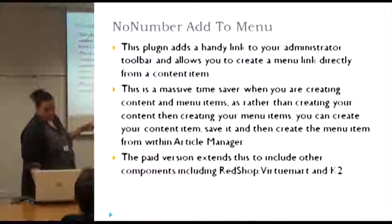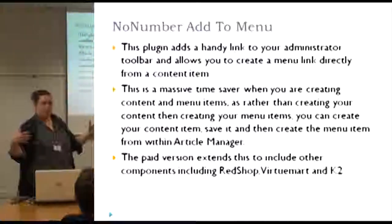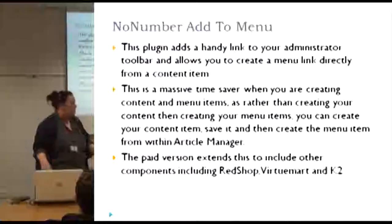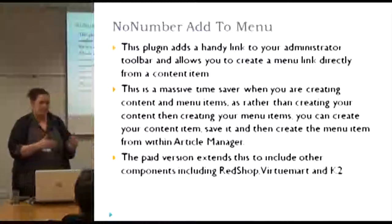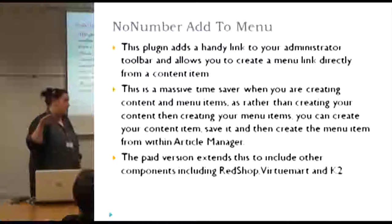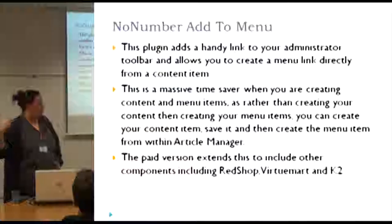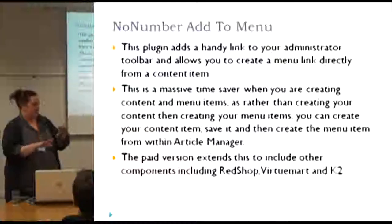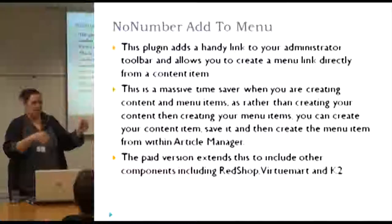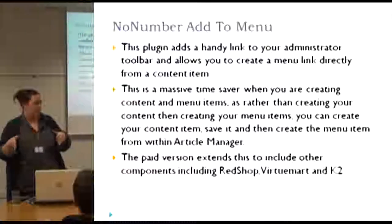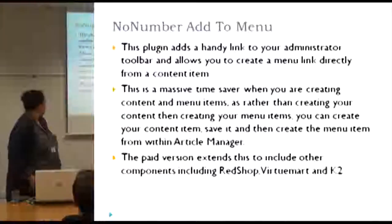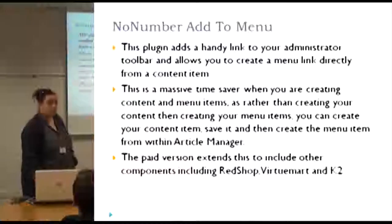The next one I use a lot, especially when I'm building a site, is No Number Add to Menu. Normally when you're building a site, you create the content, then you go back and create your menu items from the menu manager. With Add to Menu, once you've created a content item and saved it, you'll see a little button that says Add to Menu. You can then create menu items as you go, and with a big site that can save you hours and hours of time. The paid version extends to other components; the free version is just for articles.